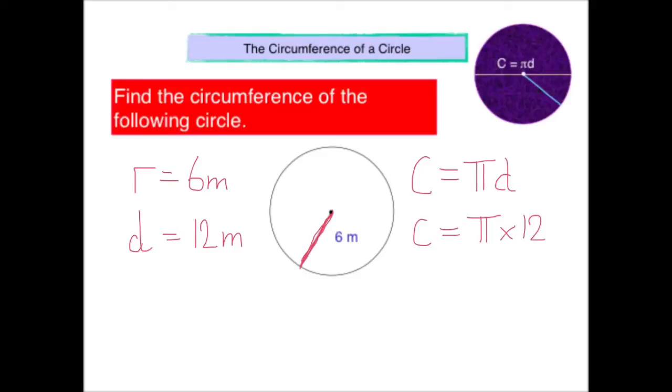And again, that might come up in your calculator as an answer of 12 pi. But if you press the s to d button, it'll come up as a decimal. And you'll see that c is equal to 37.7. And again, that's in metres because our radius and diameter were measured in metres.